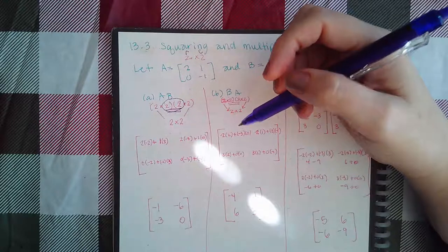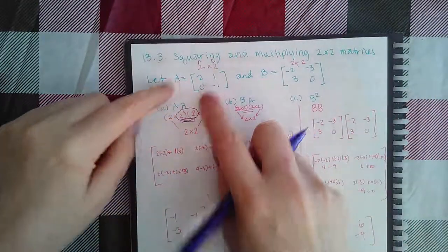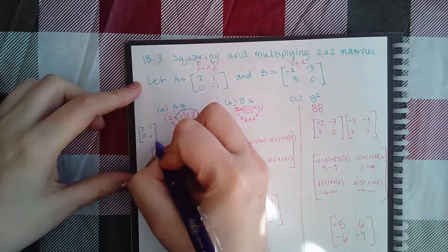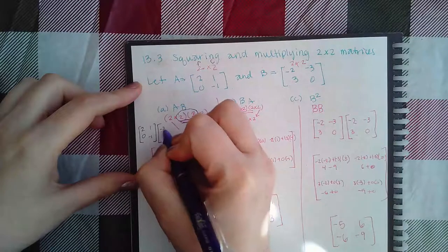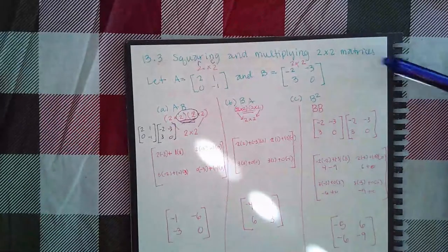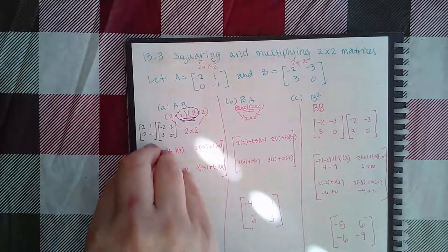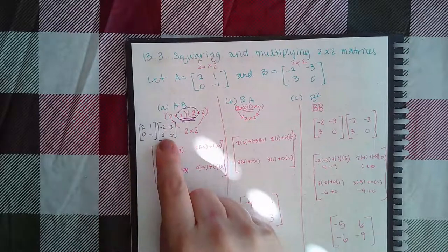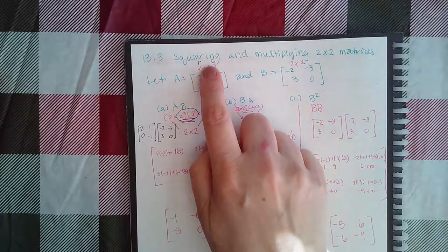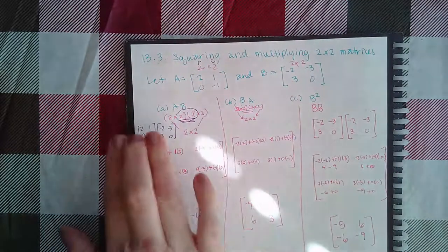This is where multiplication gets interesting. Matrix A is [2, 0; 1, -1] and matrix B is given. The process is: you take the first matrix row by column — similar to how you describe the dimensions.